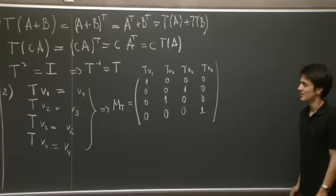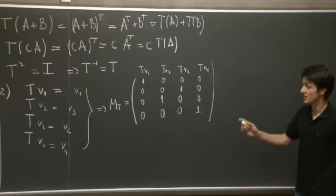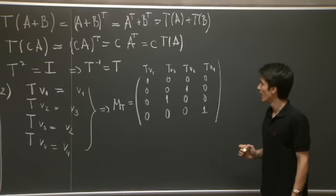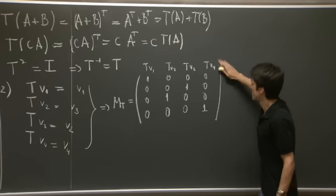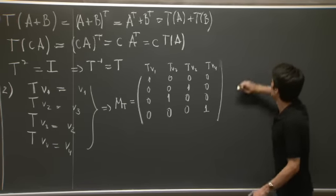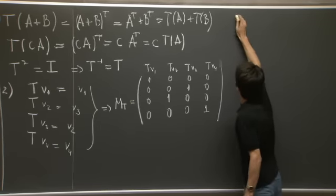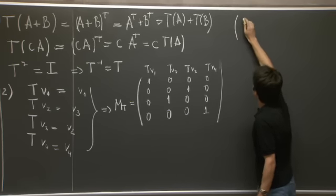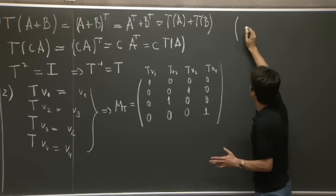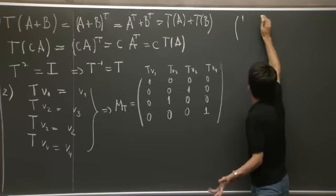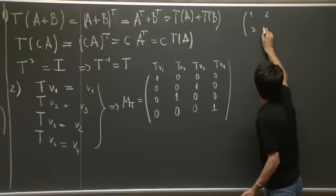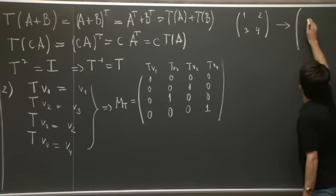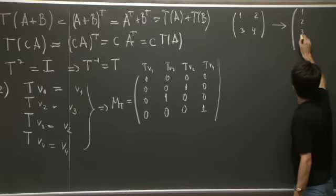So we've written down the matrix of the linear transformation T in the standard basis. And you can check that this is exactly what we want. Let's see what the representation of some matrix, say 1, 2, 3, 4, in this standard basis is. It's the vector 1, 2, 3, 4.